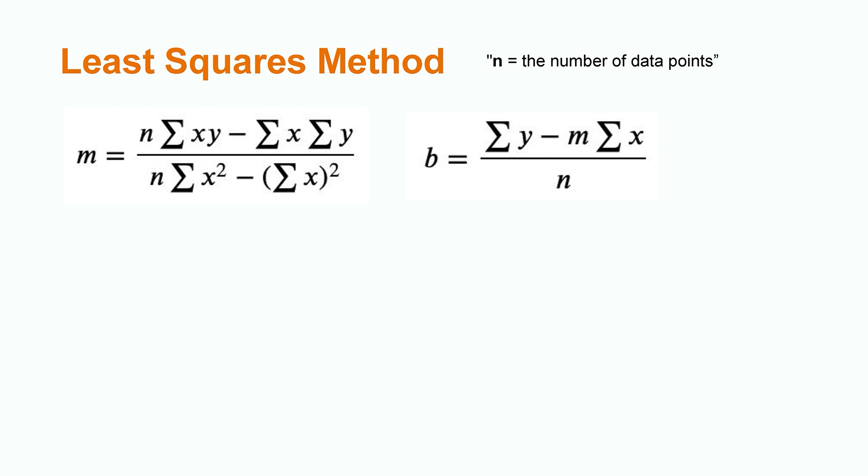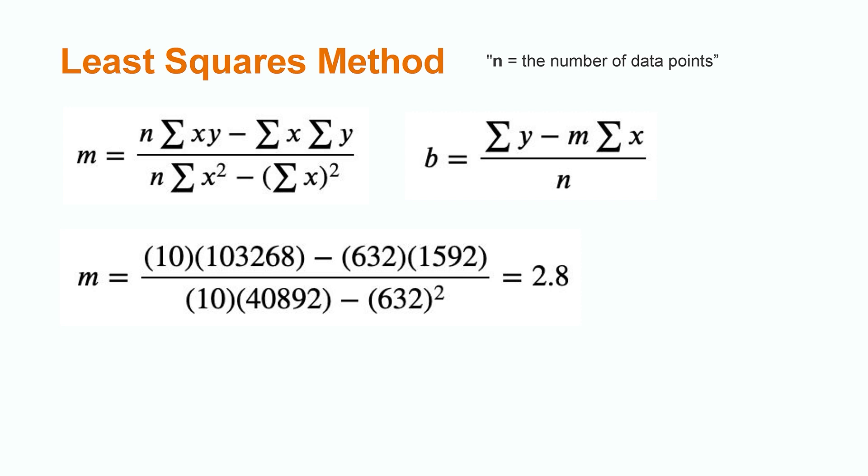What we'll need is the sum of all the x's and their squares, the sum of all the y's and their squares, and finally the sum of all the products x times y. Remember, the funny looking e thing, that just means sum of. So we just plug in the sums according to the formula, and we get this for the slope and this for the y-intercept.